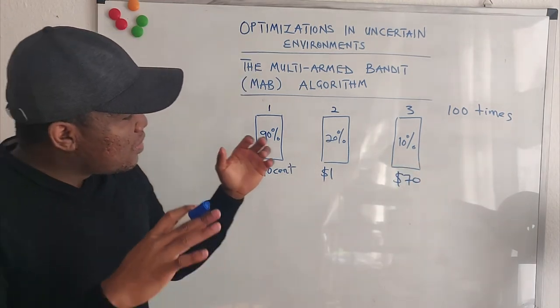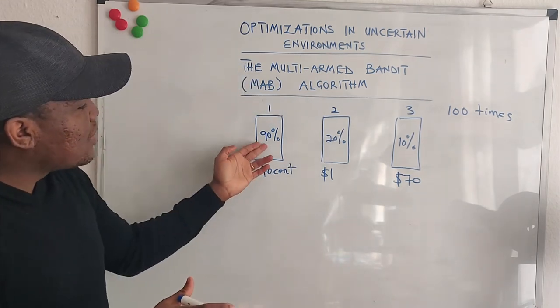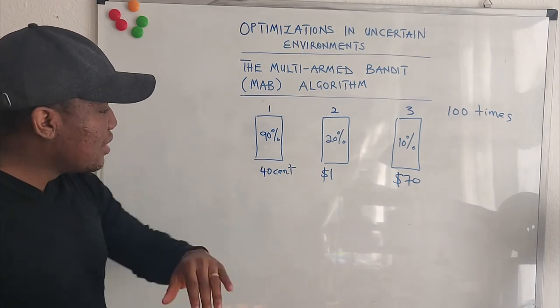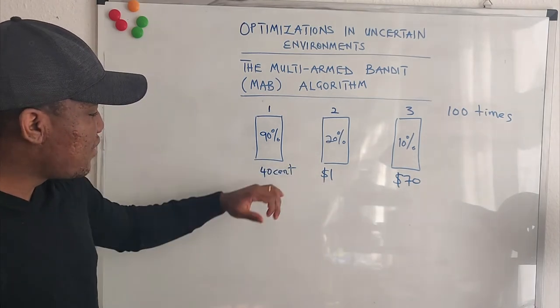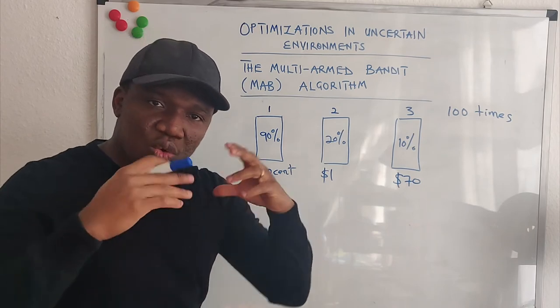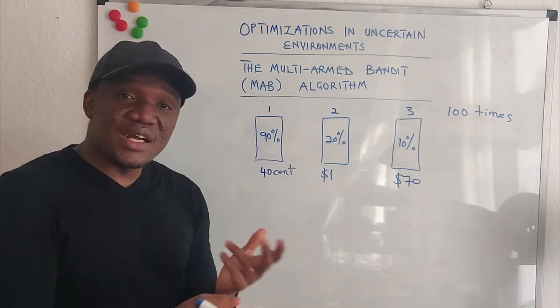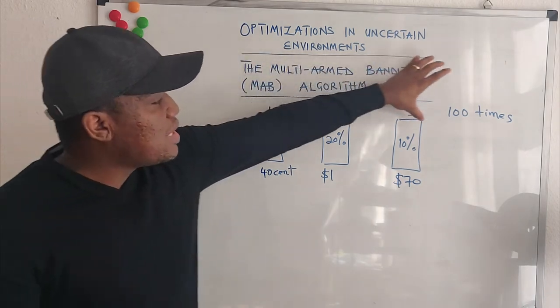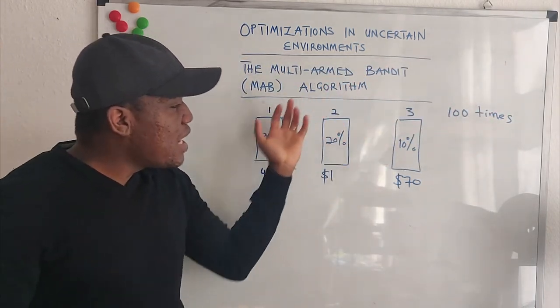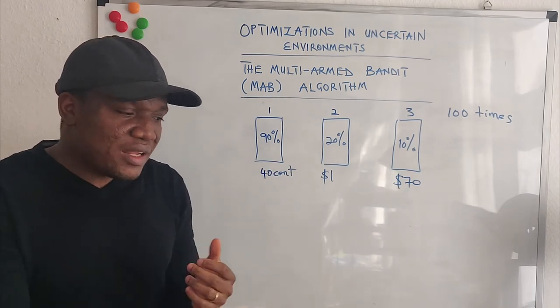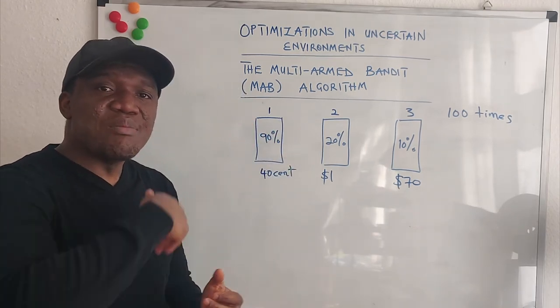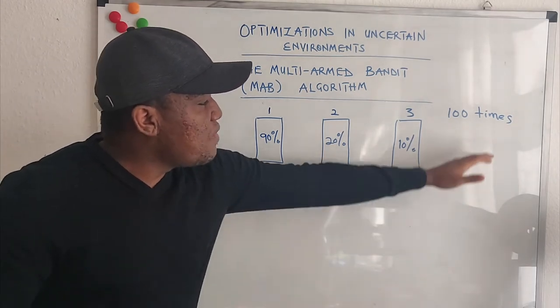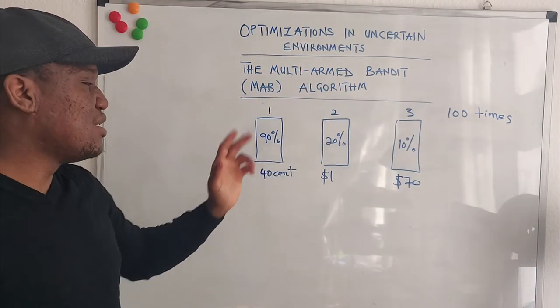Now your problem here is to figure out the probability, because nobody will tell you. We only tell you that this can reward you this much, this can give you this, this can give you this, but the probability is unknown to you. So you have to figure out the probability. And what the Multi-Armed Bandit algorithm helps you to do is to figure out these probabilities and let it inform the best action you have to take. So how do we figure out these probabilities?